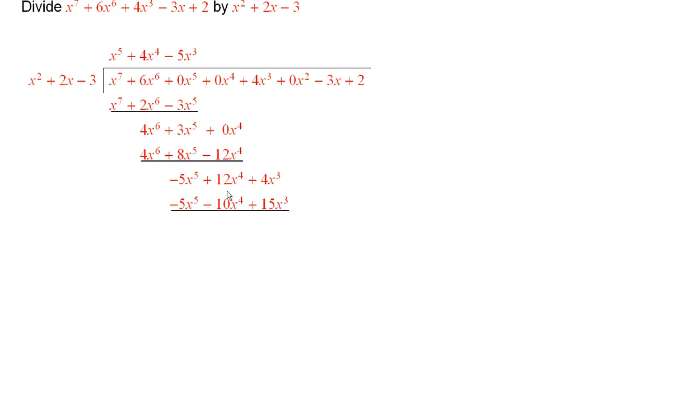So I subtracted and I got this. And then I brought down the next term up here in this expression. So now the next term that I will put up here will be plus 22x squared. Because when I take 22x squared times x squared, that will give 22x to the 4th.